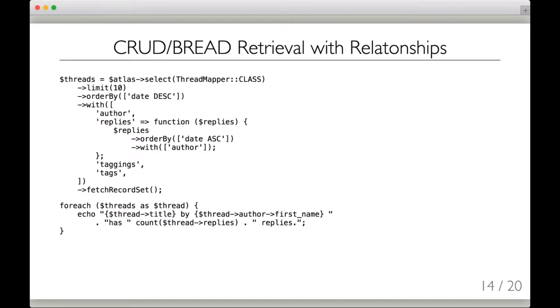This all happens in a non-N plus one kind of situation, so you get a linear number of queries, not an exponential number of queries. Then once you've got them in hand, you just loop through the thread record set. You get back a thread record out of each one. You echo the properties that are mapped to table columns directly, or you can go to a relationship, in this case thread author, and get back a column from that related element, or you can count the number of elements in the replies.